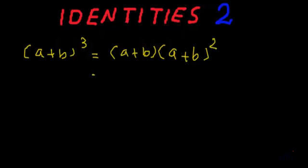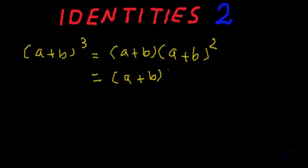Now let's expand it further. (a + b) will be written as it is, and if we expand (a + b) whole square, we get a squared plus 2ab plus b squared.